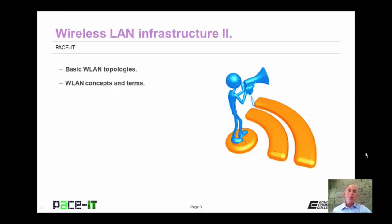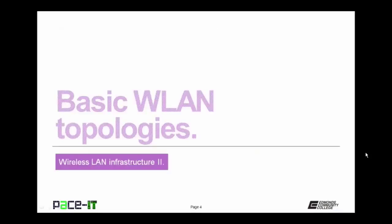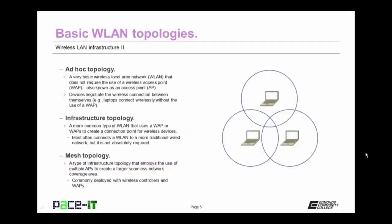There's a fair amount of ground to cover, so let's go ahead and jump into this session. I'm going to begin by talking about wireless local area network topologies, and the first topology is the ad hoc topology. It's a very basic wireless local area network that does not require the use of a wireless access point, which can also be called a WAP or an access point. The devices negotiate the wireless connection between themselves.